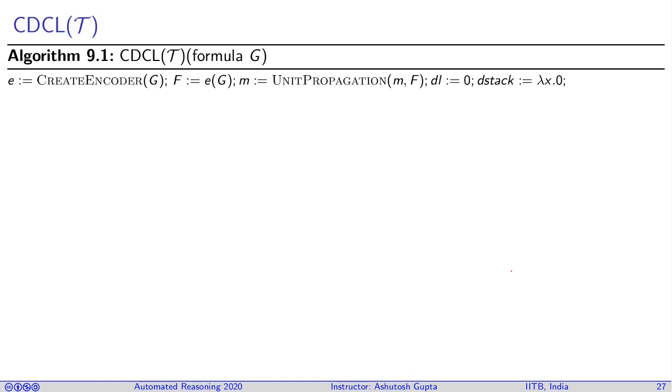It proceeds very much like CDCL. First, suppose we have an input formula G. We create a Boolean encoding and obtain a formula F. Most of the algorithm will operate on F. Like the previous CDCL, you do unit propagation as soon as you have some change in situation. You declare that your number of decision levels is zero, the stack is initialized, and then you carry on.